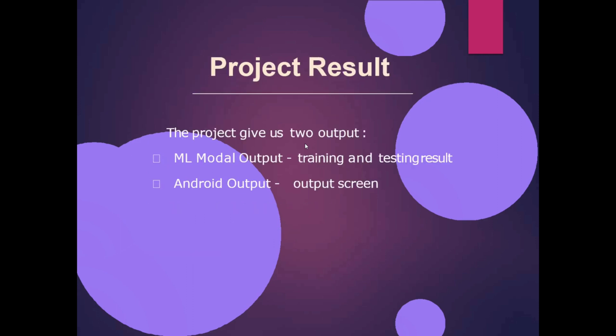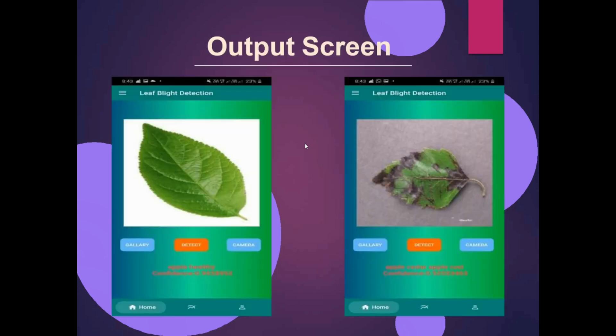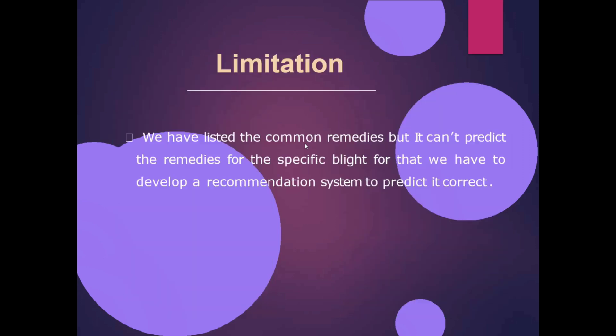Here is the project result. This is the training and testing result. On the output screen, on the left side you can see the apple healthy, and on the right side you can see the apple cedar apple rust.